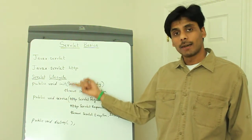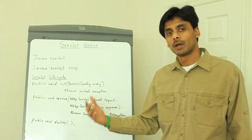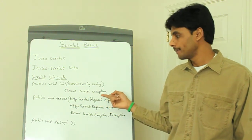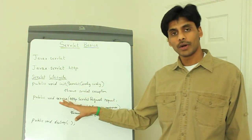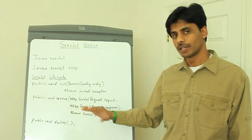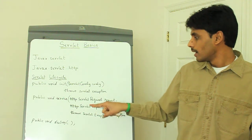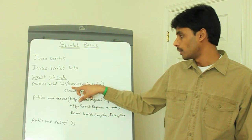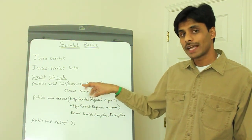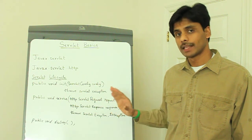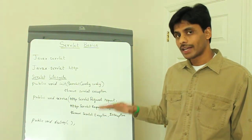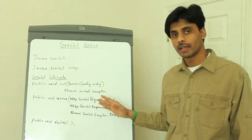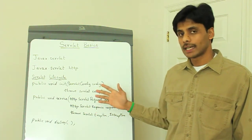If the init method doesn't complete properly — for example, if it can't load the Struts config file or can't connect to the database — it should throw a servlet exception. The service method is the core of any servlet class and all the logic goes in here. The servlet container provides these methods with objects like ServletConfig, which has all the information in the web.xml deployment descriptor, so you can read that configuration from within the servlet.